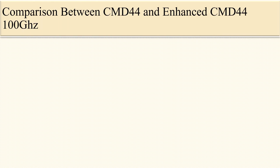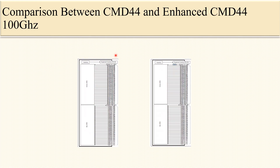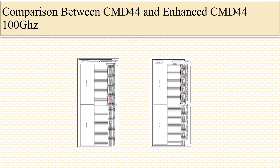Hello friends. In today's video we will discuss the comparison between CMD44 and enhanced CMD44 with 100 GHz channel spacing — the channel spacing between these modules is 100 GHz and that is fixed. The PEC code of CMD44 100 GHz is entity 862-AA5, and the PEC code of enhanced CMD44 100 GHz is entity 862-FAE5.